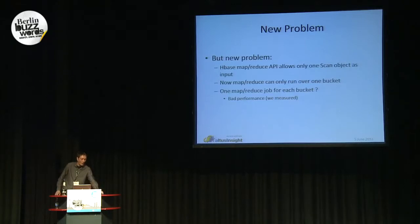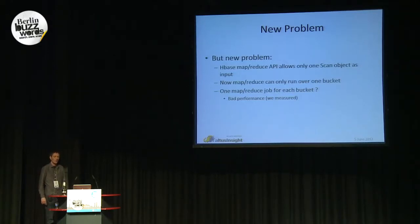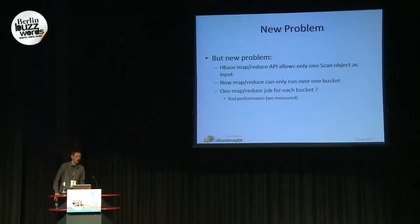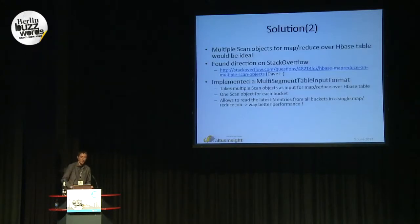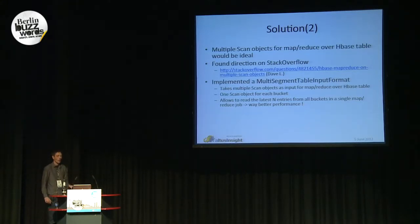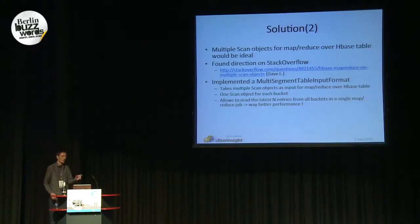So we started to think about what we can do. One easy solution would be to start one MapReduce job for each bucket. But it doesn't make a lot of sense because having 100 MapReduce jobs on a fairly small cluster just doesn't perform — we measured it and a lot of our jobs didn't even finish. So we thought, wouldn't it be better if instead of putting just one scan object into the MapReduce API, we could pass in a whole list of scan objects?